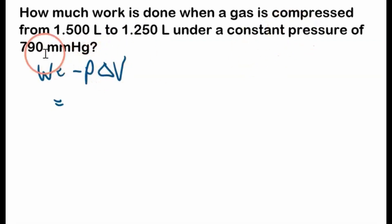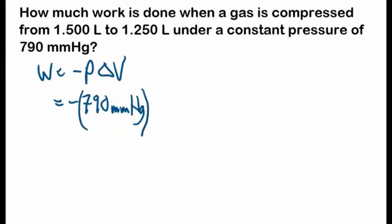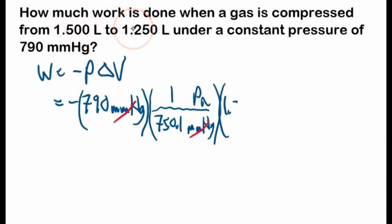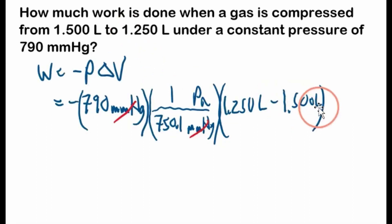Work equals negative P, and since it's constant pressure we can plug this in: negative 790 millimeters of mercury. But we're not in pascals, so that's a problem — we need to convert. You should be given a conversion sheet to convert millimeters of mercury to pascals. One pascal equals 750.1 millimeters of mercury, so millimeters of mercury cancel out and we're left with pascals. Now for the change in volume, our final is 1.250 liters minus 1.500 liters — but we have liters and we want meters cubed.